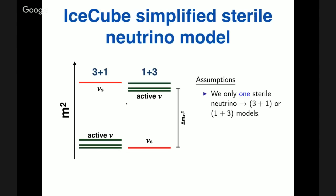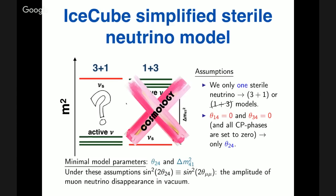In our simplified model, the sterile can be heavier (3+1) or lighter (1+3). Cosmology doesn't like large neutrino masses at the 1 eV scale, placing stronger constraints on the 1+3 model, so we focus on the 3+1 model. We set all CP phases to zero and set two of the three new angles to zero, keeping only theta-2-4. With these assumptions, sine-squared(2*theta-2-4) equals exactly sine-squared(2*theta-mu-mu), the amplitude of muon disappearance in vacuum — a very nice interpretation.